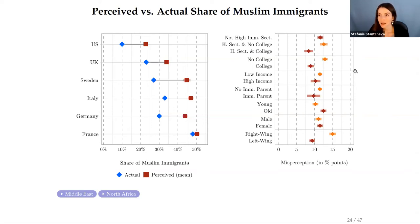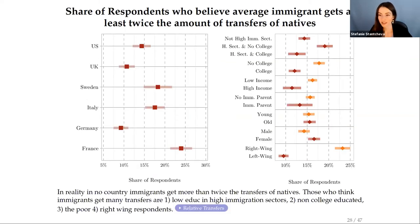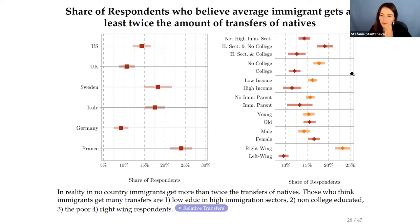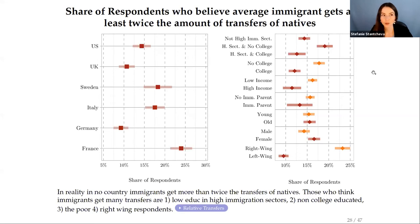An interesting question is how much respondents perceive immigrants as relying on government transfers. The graph shows the share of respondents who think the average immigrant receives at least twice the transfer amount of an average non-immigrant. In no country is this actually the case, so the correct answer should be zero — yet the share of respondents who think so is not small, except in Germany. There is a very big partisan gap here, with right-wing respondents much more likely to believe immigrants rely heavily on transfers relative to natives.